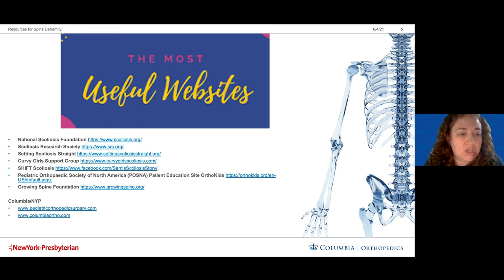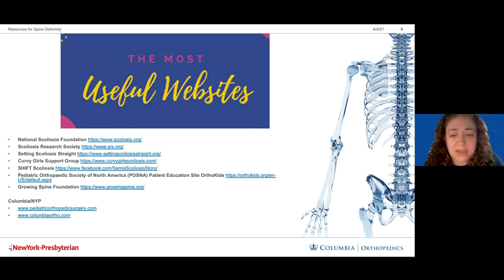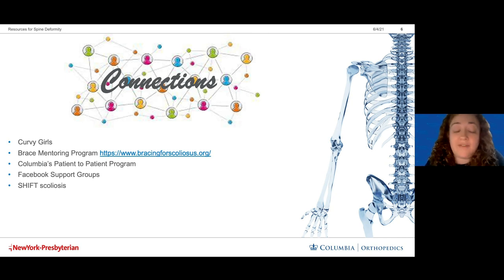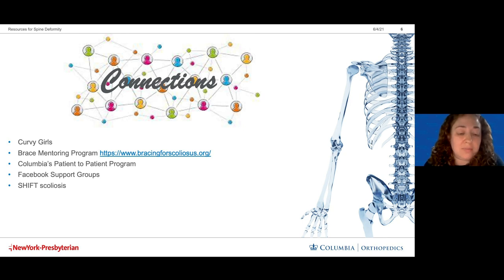Useful websites include the Scoliosis National Foundation, the Scoliosis Research Society, Setting Scoliosis Straight, the Curvy Girls support group, SHIFT on Facebook, POSNA and AAOS education websites, and Growing Spine Foundation for younger kids. Connecting patients with other kids going through the same thing is the whole premise of Curvy Girls — an international collaboration that started in Long Island, with groups that meet monthly or less often, and gather every other year in Long Island. Watching them all connect and normalize their experience is really great.